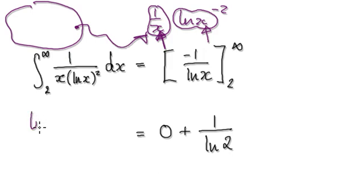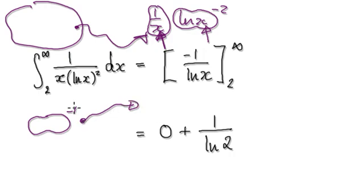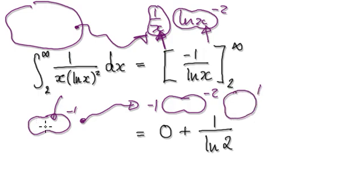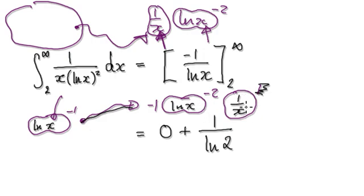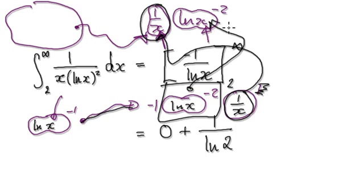If I give you natural log of x to the power of minus 1 and differentiate it: the minus 1 comes down, the bubble stays intact, the power gets reduced by 1, and you multiply by the derivative of the bubble itself, which is 1 over x. So 1 over x here matches up with the 1 over x in the integrand, and this matches up exactly. If you can master it by glancing, you can integrate faster. So the integral gives us minus 1 over natural log of x.